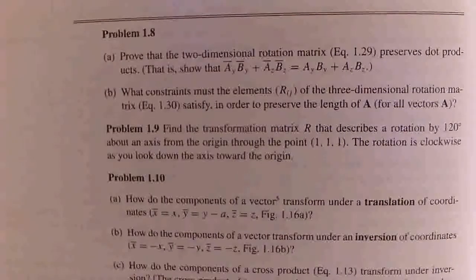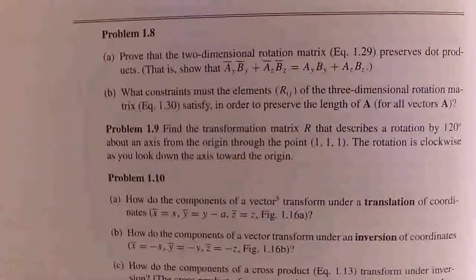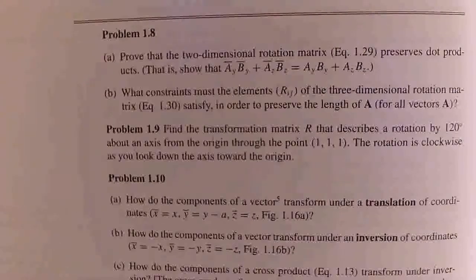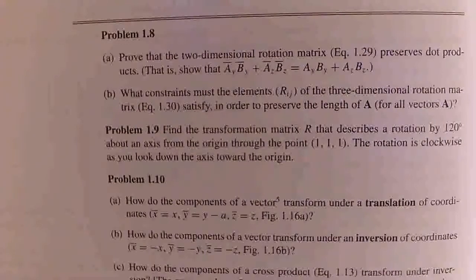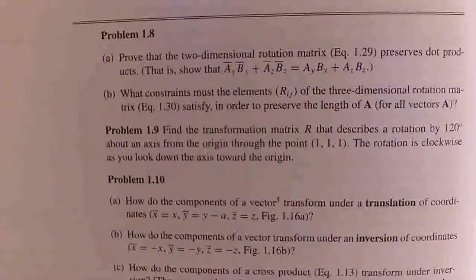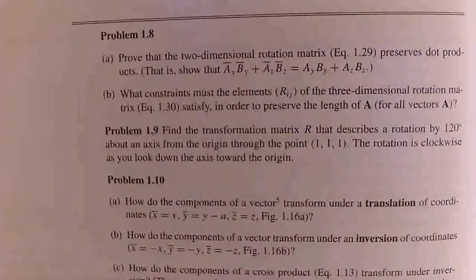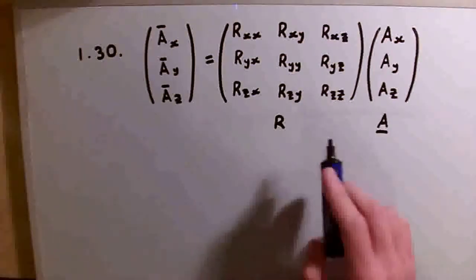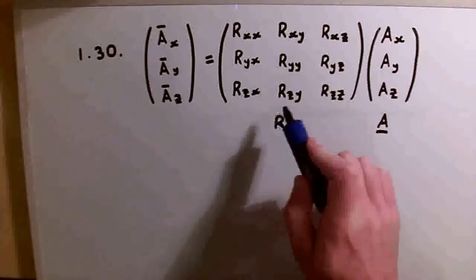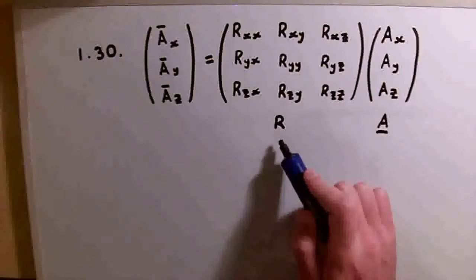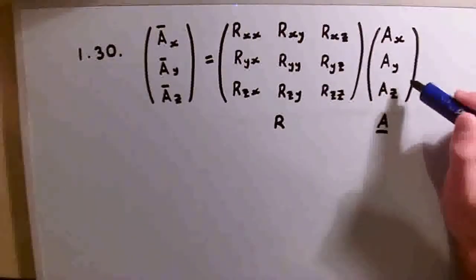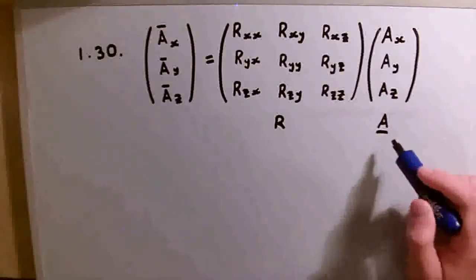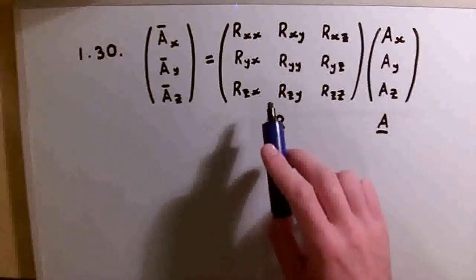In this video we're solving problem 1.8B from Griffiths' Introduction to Electrodynamics. This asks what constraints must the elements R_ij of the three-dimensional rotation matrix in equation 1.30 satisfy in order to preserve the length of A. Equation 1.30 is written out here, where R is our three-dimensional rotation matrix acting upon a three-dimensional vector A, and we want to place constraints on R.